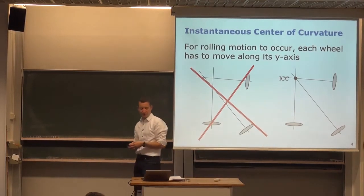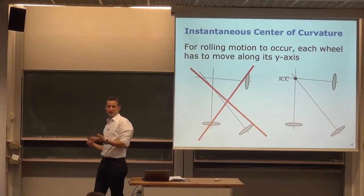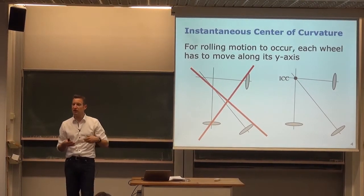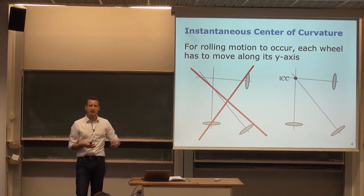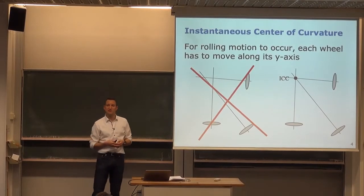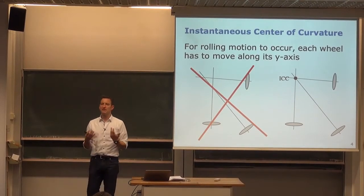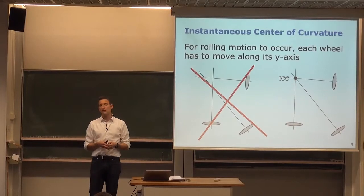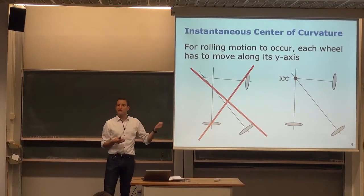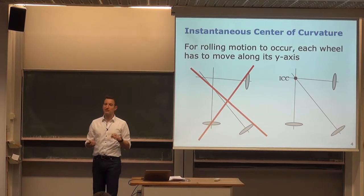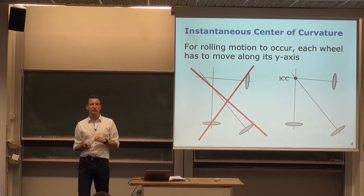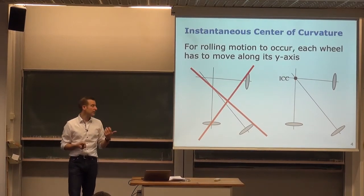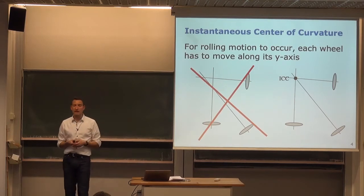We are interested in generating this ICC, and it depends on our drive whether this comes out automatically. For the differential drive, as we'll see, the ICC is typically generated automatically. But other drives have more degrees of freedom where this is not always the case, and we need to control velocities carefully to satisfy constraints.